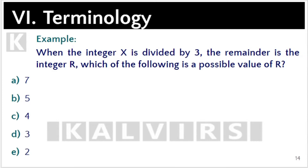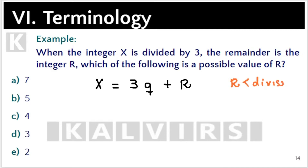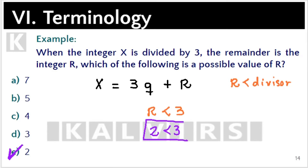When the integer x is divided by 3, the remainder is the integer r. Which of the following is a possible value of r? According to the division formula, x is the dividend, 3 is the divisor, let q be the quotient, and the remainder is r. Since the remainder is always less than the divisor, r must be less than 3. Therefore a possible value of r is 2, because 2 is less than 3. Choice E is correct.